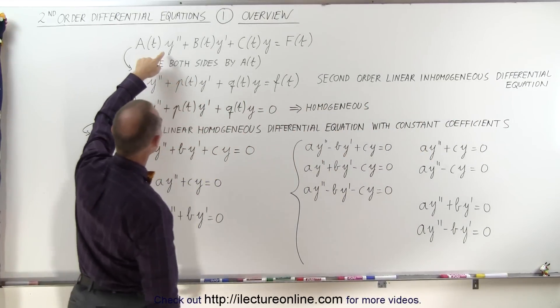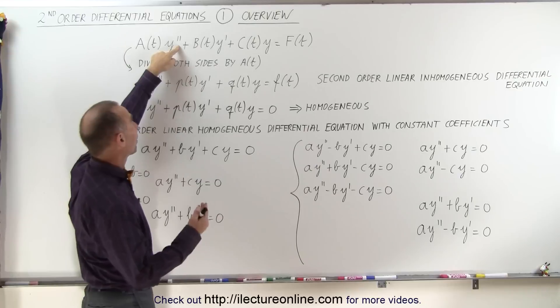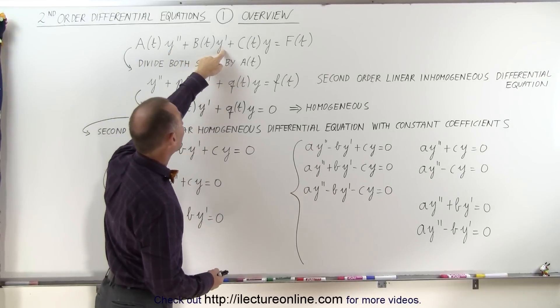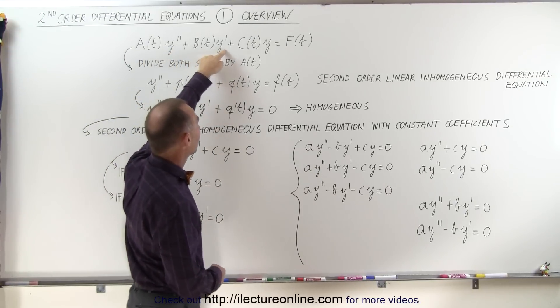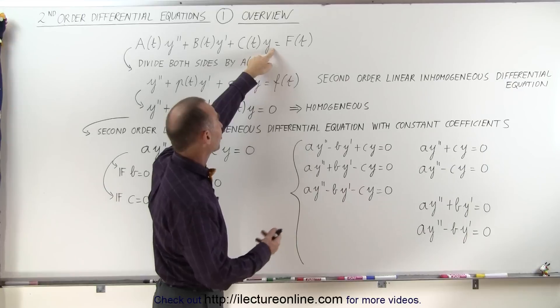The general form is that you have a y double prime, which is the second derivative of y, y prime, the first derivative of y, and then have y, simply the function of y.